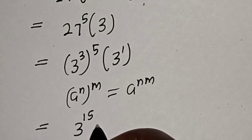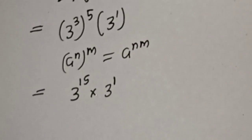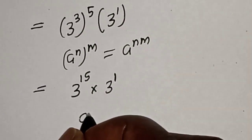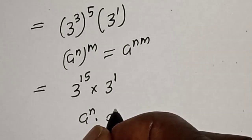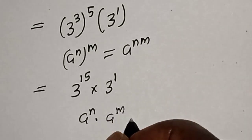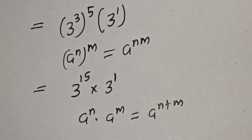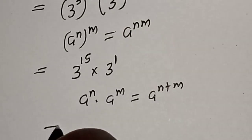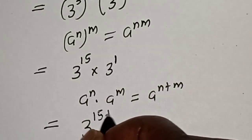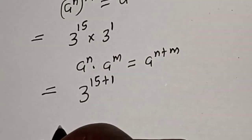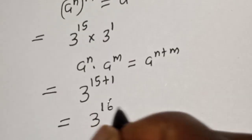Then multiply by 3 raised to power 1. Also take note that if you have a raised to power n, multiplied by a raised to power m, this is equal to a raised to power n plus m. Then this equals 3 raised to power 15 plus 1, equal to 3 raised to power 16.